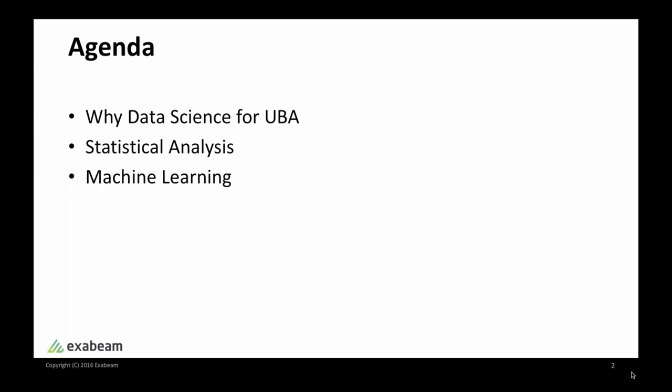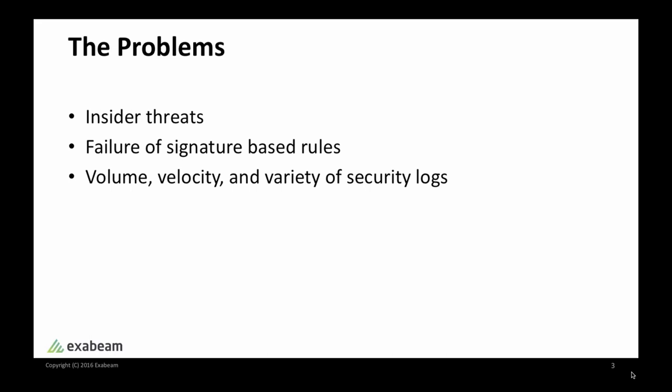I will talk about the main tools used, such as statistical analysis and machine learning, and how they are applied to UBA. So why data science for UBA? Insider threats are a very real cybersecurity risk faced by many companies. We all know the Snowden Affair is the quintessential example. A threat of this type is hard to detect by conventional signature-based approaches. To a security information and events management system, Snowden-like activities are no different than any other activities from trusted employees, and conventional signature-based rules fail to detect them.